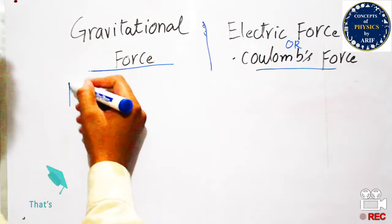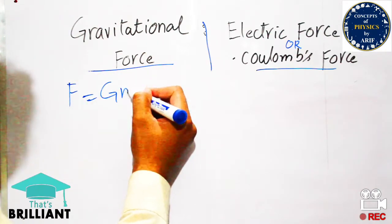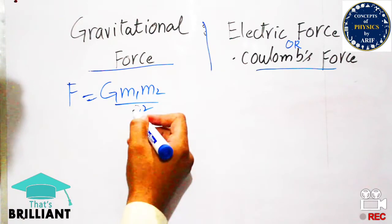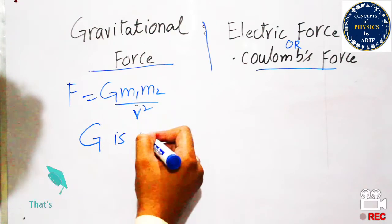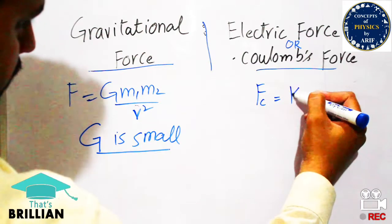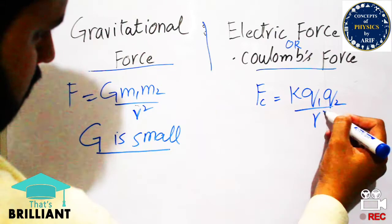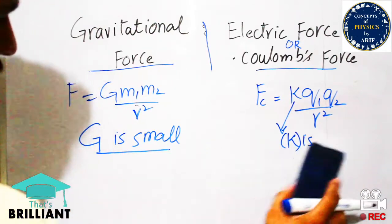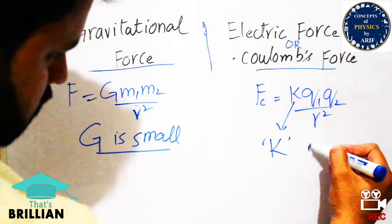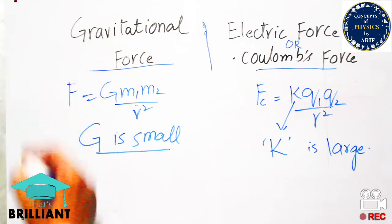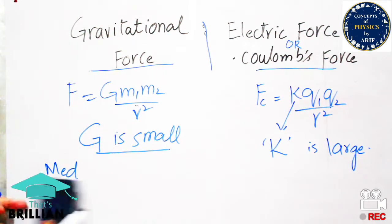Another difference between gravitational force and electric force comes from the constants in their formulas. In Fg = G·M1·M2 / R², the value of G is very, very small. But in the case of Coulomb force — Fc = K·Q1·Q2 / R² — K is a constant with a very high value. The value of K is usually 9 × 10⁹ N·m²/C². This difference in constant values is a key distinction between the two forces.